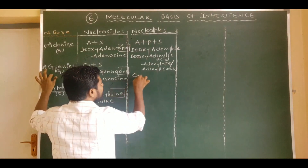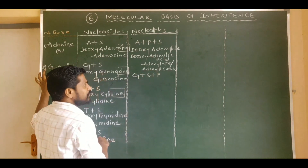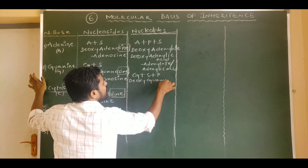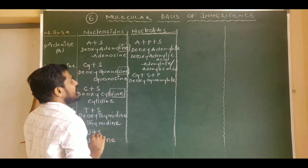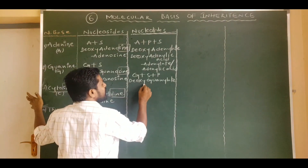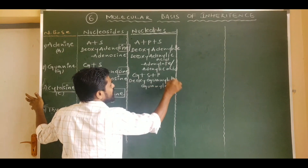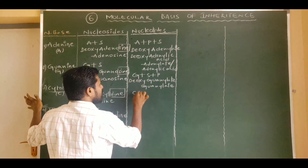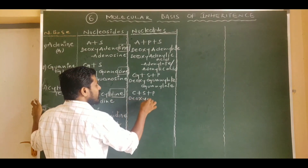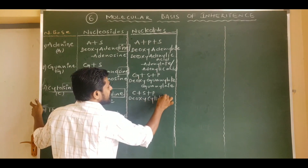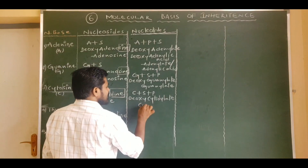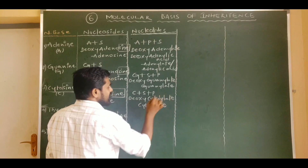The guanine nucleotide consists of guanine plus pentose sugar plus phosphate group. Its scientific name in DNA is deoxyguanylate or deoxyguanylic acid, and in RNA it is simply guanylate or guanylic acid. The cytosine nucleotide — cytosine plus pentose sugar plus phosphate group — is called deoxycytidylate or deoxycytidylic acid in DNA, and simply cytidylate or cytidylic acid in RNA.